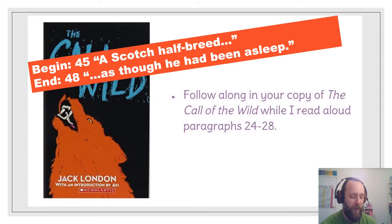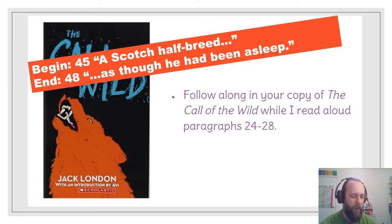Sometimes, as he crouched there blinking dreamily at the flames, it seemed that the flames were of another fire, and that as he crouched by that other fire, he saw another and different man from the half-breed cook before him. This other man was shorter of leg and longer of arm, with muscles that were stringy and knotty. The hair of this man was long and matted, and his head slanted back from the eyes. He uttered strange sounds and seemed very much afraid of the darkness, clutching a stick with a heavy stone made fast to the end. He was all but naked, a ragged fire-scorched skin hanging partway down his back.